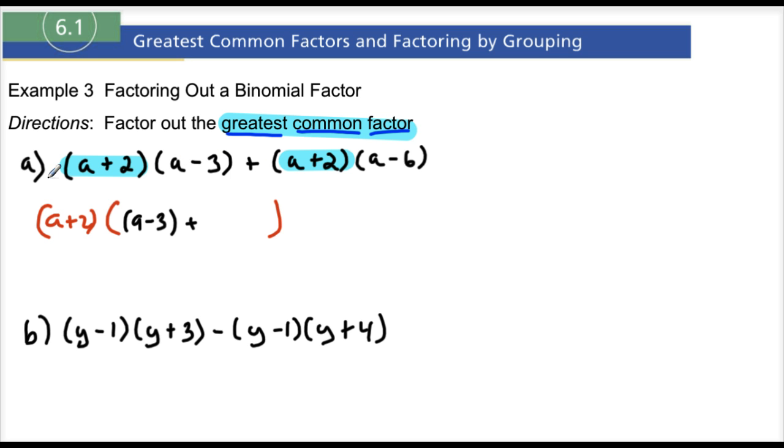Because A plus 2 times A minus 3 gives me back A plus 2 times A minus 3. Plus, because of the plus sign. A minus 2 times what is A plus 2 times A minus 6? Well that's just A minus 6. And if you multiply that back through, you'll get it.